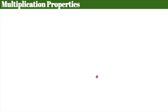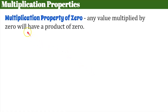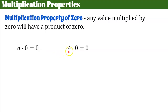Let's review some multiplication properties that could make your multiplying easier. The multiplication property of zero states that any value multiplied by zero will have a product of zero. Algebraically: a × 0 = 0. For example, 4 × 0 = 0 and -4 × 0 = 0. Simply stated, any value multiplied by zero has a product of zero.